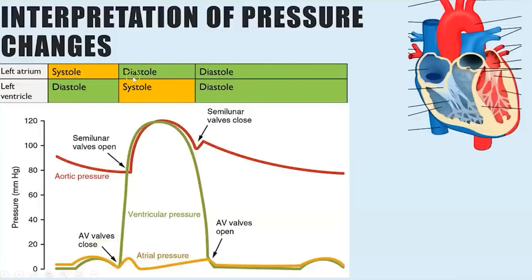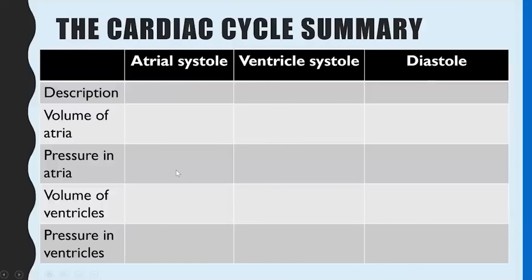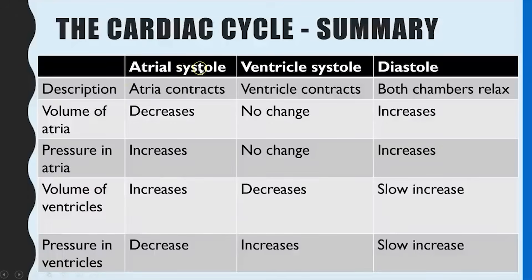In summary, using a table for atrial systole, ventricular systole, and diastole: atrial systole means the atria are contracting; ventricular systole means the ventricles are contracting; diastole means both sets of chambers are relaxed.